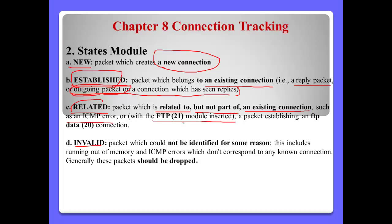For FTP, we normally use port 21 to download and upload files. But FTP also must use port 20 for data transfer. So even if we permit port 21, port 20 must also be used for FTP services — port 20 would be handled via 'Related'. 'Invalid' means a packet which could not be identified for some reason. Normally we don't respond to these connections — they will be dropped.